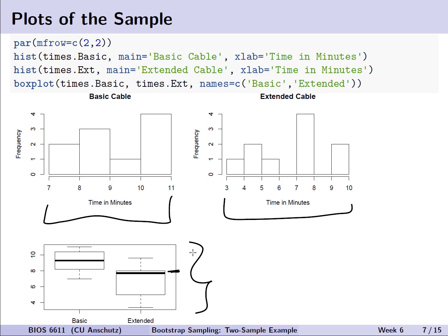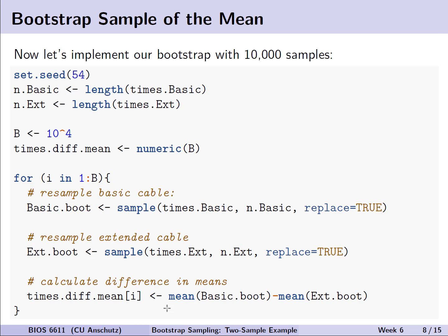whereas the extended cable seems to have its median value being a bit higher, but again, as we saw with the histogram, a lot of spread towards lower potential times for duration of commercials.